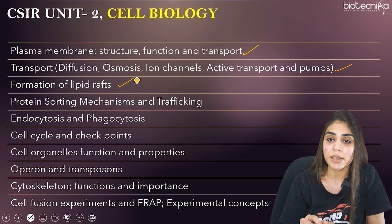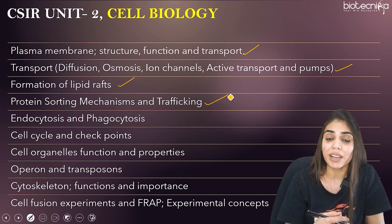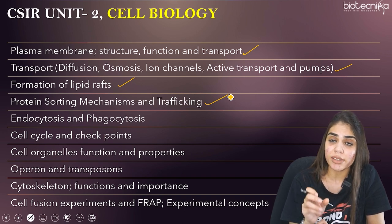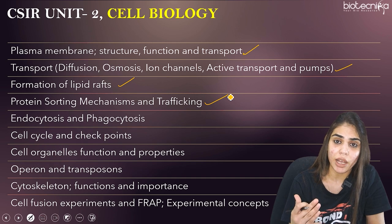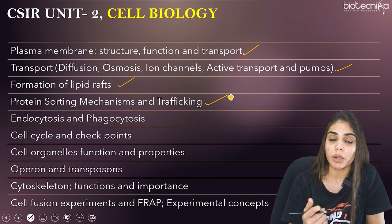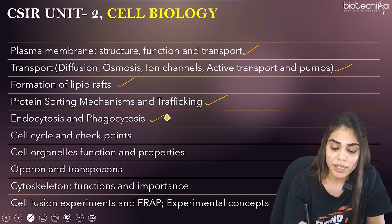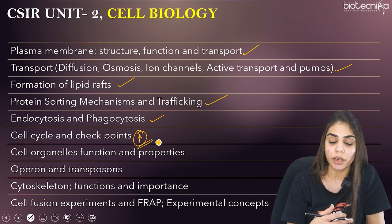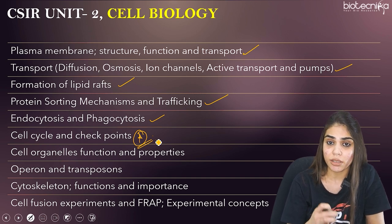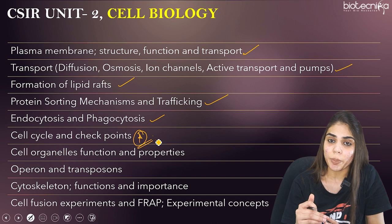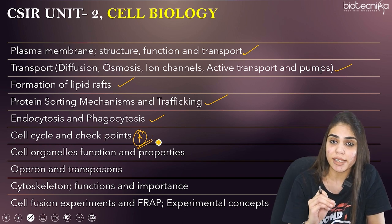The next is protein sorting mechanisms and trafficking. You should know about intracellular as well as co-translational protein sorting mechanisms, and the signal sequences specific for different organelle transport — plastid, mitochondria, ER, or Golgi body. Also cover endocytosis and phagocytosis pathways. Very importantly, cover cell cycle and checkpoints — questions are asked from this topic every year, sometimes together with Unit 4. Do not leave this topic.